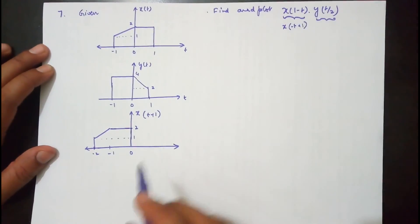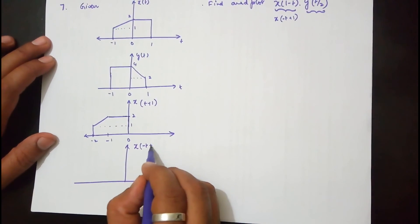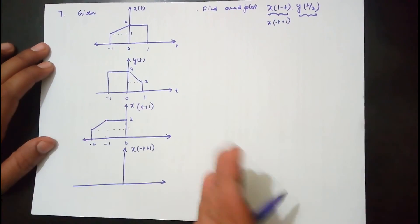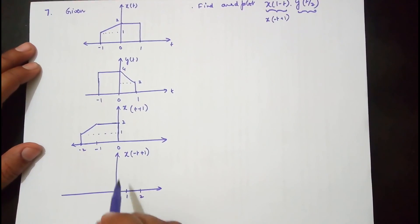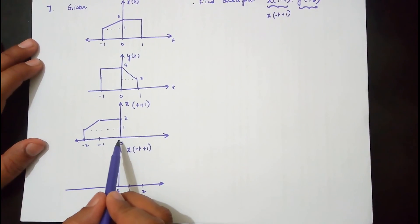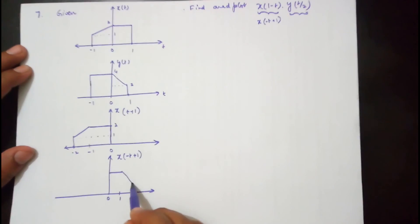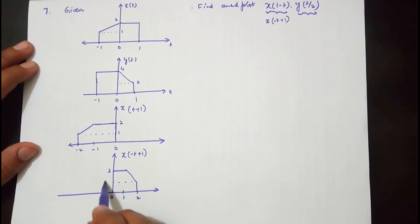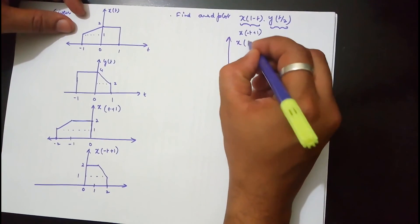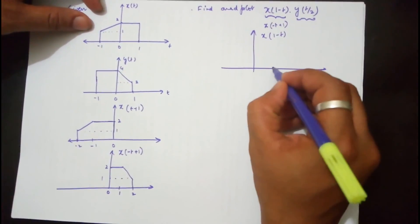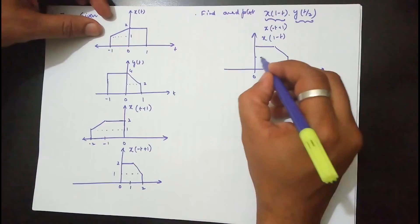Next, we take the reflection about the y-axis to get x(-t+1), which is x(1-t). Taking the mirror image over the y-axis, the waveform which extended from -2 to 0 now extends from 0 to +2, with the same amplitudes: amplitude 2 and amplitude 1 at t=2. This is x(1-t), extending from 0 to 2.